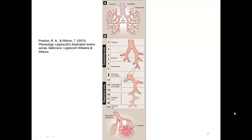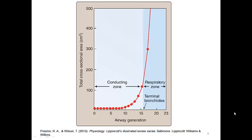Let's look at the respiratory zone, which is generation seventeen to twenty-three of the bronchial tree. Generation seventeen to twenty-three comprises the respiratory bronchioles, the alveolar ducts, and the alveolar sacs, and is characterized by a tremendous amplification of the cross-sectional area even as the passages narrow. The respiratory zone is the location of the blood-gas interface.